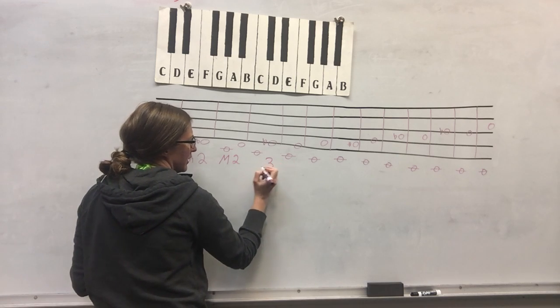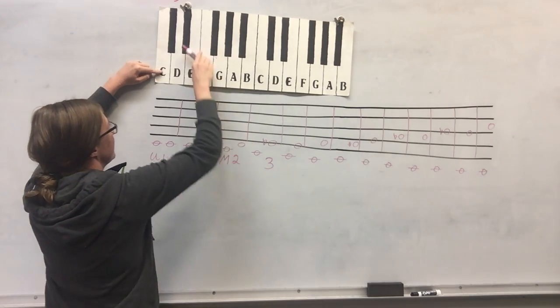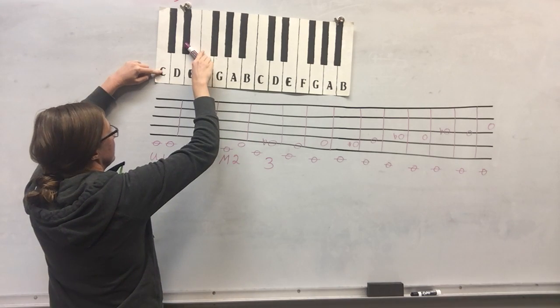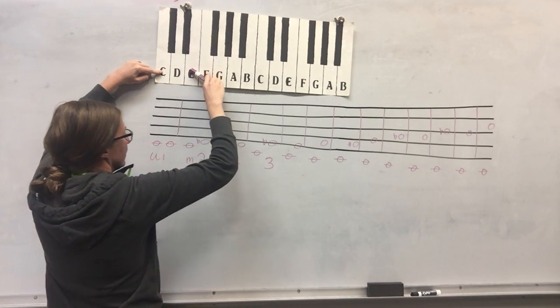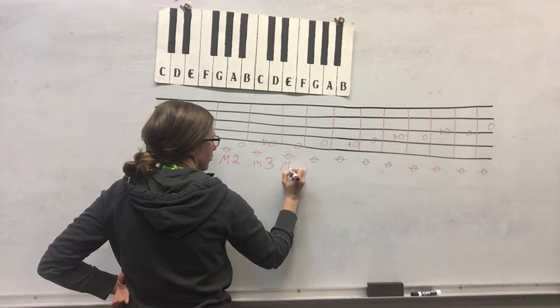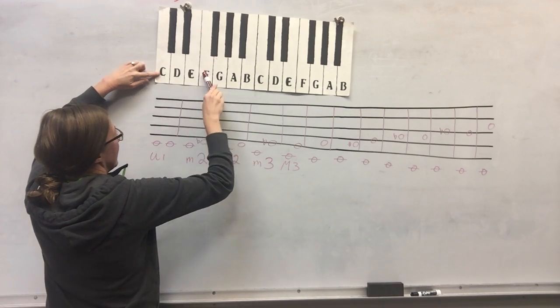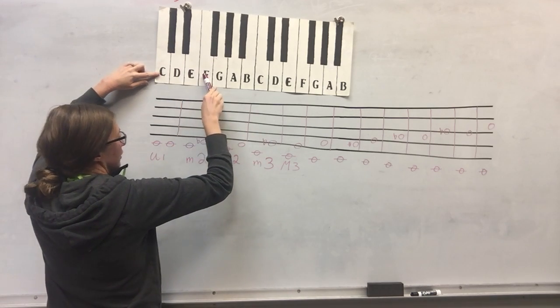My next one, one, two, three, is going to be a third of some sort. The minor is going to be the one that's closer together, so C to E flat. It's closer together than C to E, so it's my minor. C to E is my major.